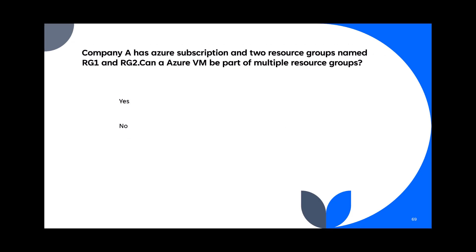Question 69: A company has an Azure subscription and two resource groups named RG1 and RG2. Can an Azure VM be part of multiple resource groups? If you create a VM, it must belong to only one resource group. You cannot put one resource into multiple resource groups. So the answer is no.